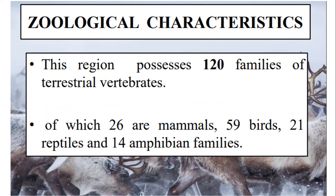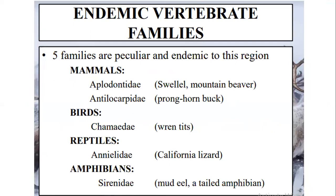Regarding zoological characteristics, a total of 120 families of terrestrial vertebrates are present in this region, out of which 26 are mammalian families, 59 are avian families like birds, 21 are reptilian, and 14 are amphibian families. Five families are peculiar and endemic to this region out of the 120.